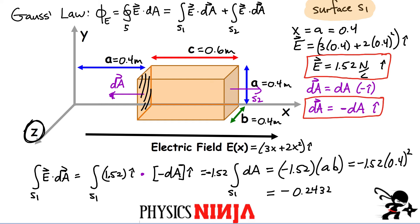That is in units of newtons per coulomb times meters squared — the units of electric flux. So that is this first term that we've just evaluated. Now the second term is done in a similar fashion, except the electric field has to be evaluated at a different position.